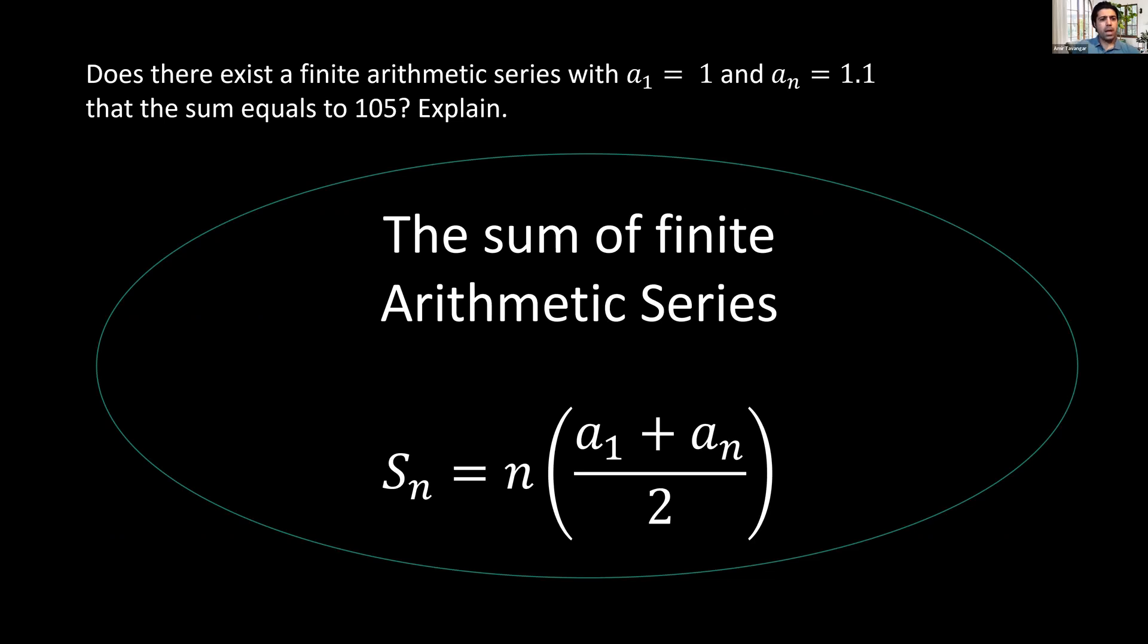Hello everyone, this problem is asking whether there exists a finite arithmetic series with the first term 1 and the nth term 1.1, where the sum equals to 105.